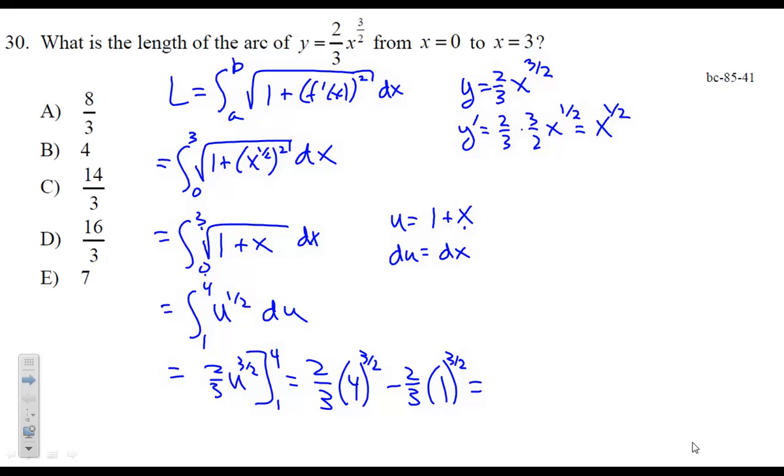The square root of four is two, two cubed is eight, so this is two-thirds times eight minus two-thirds, or sixteen-thirds minus two-thirds, which is fourteen-thirds, which is our answer.